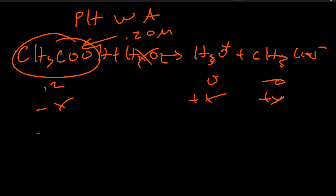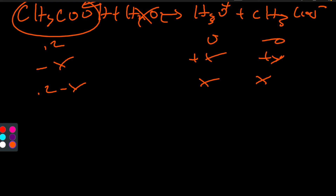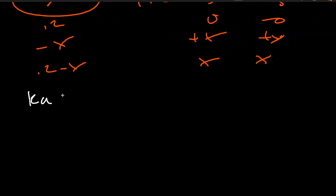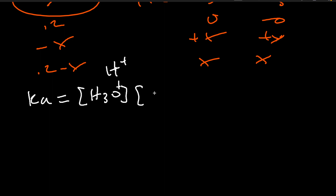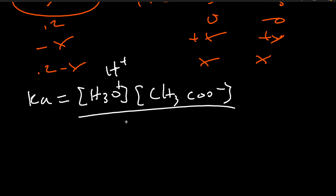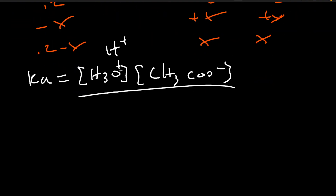So the equilibrium concentrations are: 0.2 − X, X, and X. Now we write the Ka expression. Ka equals products over reactants: [H₃O⁺][CH₃COO⁻] divided by [CH₃COOH], which is X · X over (0.2 − X).